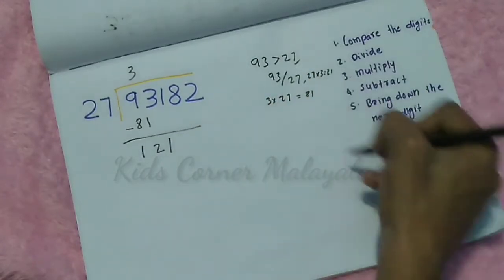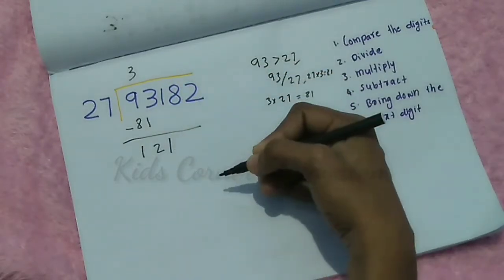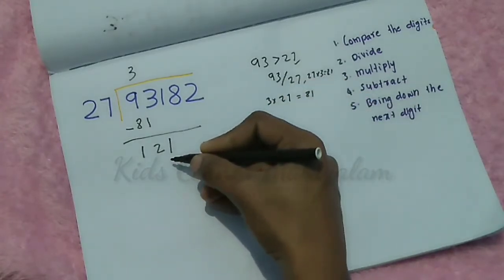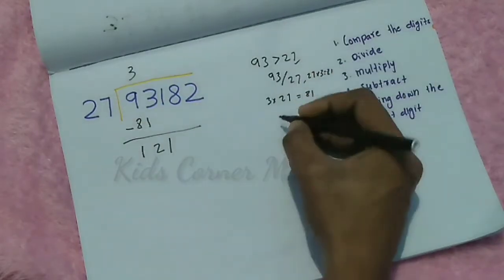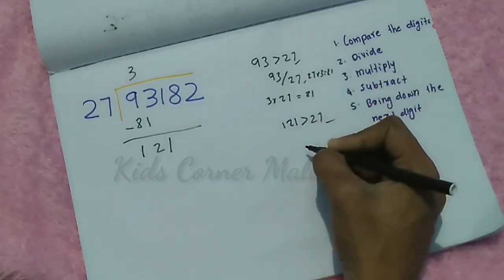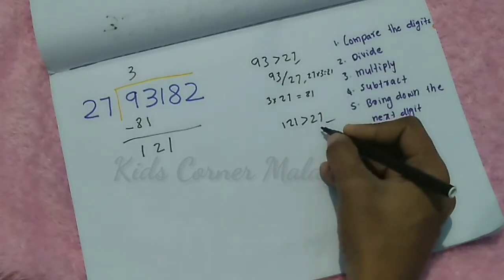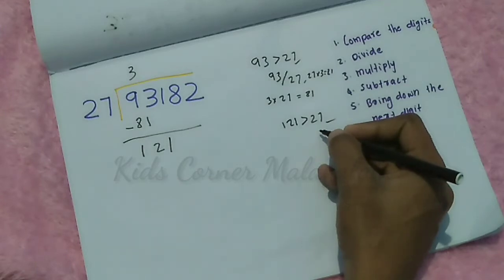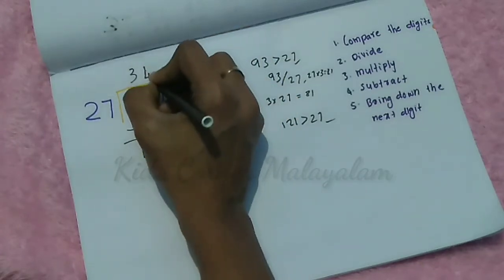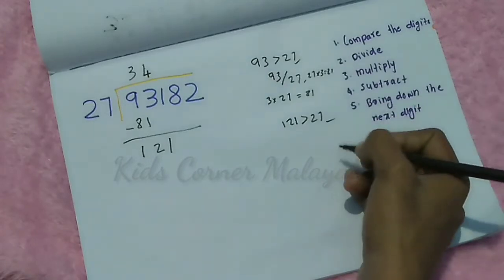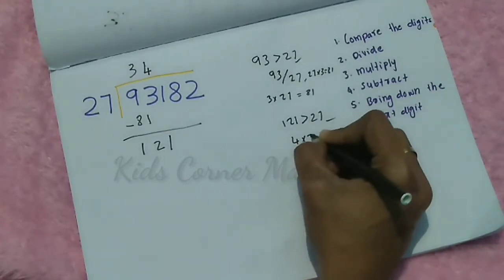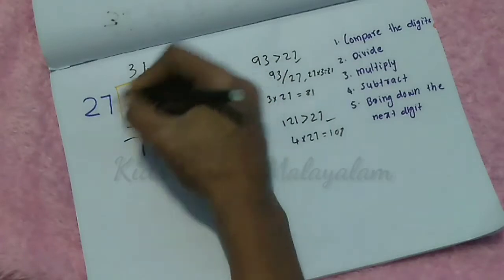Now we repeat the full cycle. Compare 121 with 27. 121 is greater than 27, so we continue. We divide 121 by 27 — that is 4 times. The next quotient digit is 4. We multiply 4 into 27, which gives us 108.